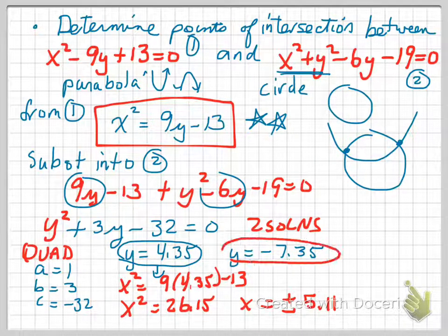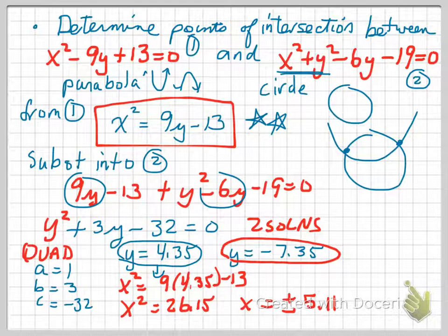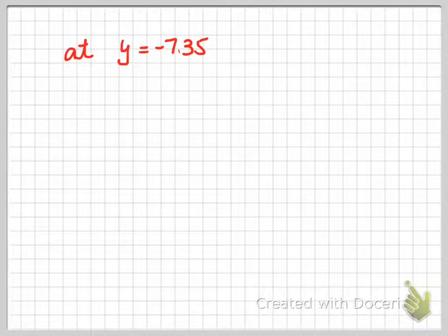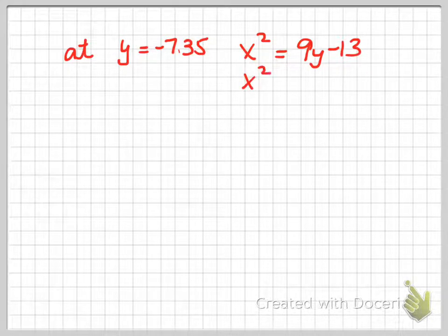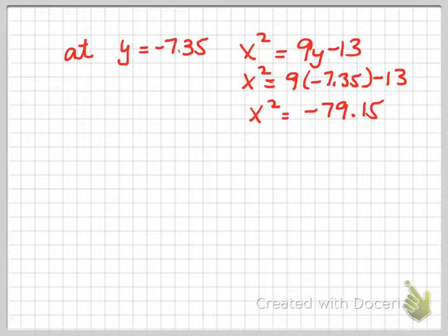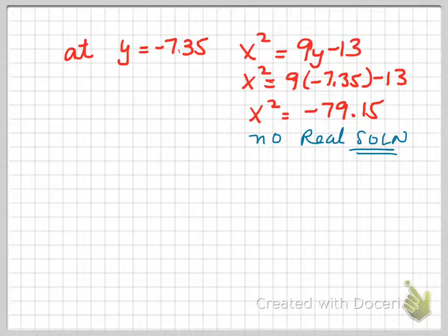What happens when we substitute y is equal to negative 7.35 into the equation? When you substitute y is equal to negative 7.35, we've got at y is equal to negative 7.35, and the fact that we know that x squared is equal to 9y minus 13, and we substitute, we end up with x squared is equal to 9 times negative 7.35, subtract 13. This is going to give us an equation that says x squared is equal to negative 79.15. What does that tell us? That tells us that there is no real solution here. In other words, they are complex solutions. They involve the square root of a negative quantity.